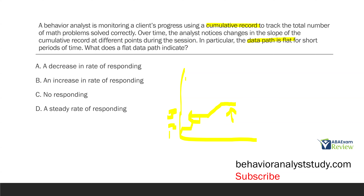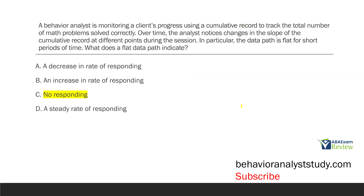If the data path is flat, that means there are no responses being added. Option A — a decrease in rate of responding: possible, but a flat line means no responding at all, not just a decrease. Option B — an increase in rate of responding: a steeper slope would indicate that. Option C — no responding: yes, a flat data path on a cumulative record means you are not collecting any responses. Option D — a steady rate of responding: there can't be a steady rate if there is no responding. The answer is C, no responding.